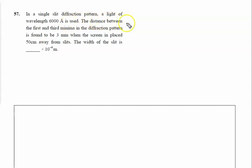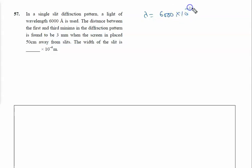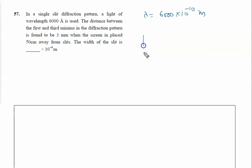In a single slit diffraction pattern, light of wavelength 6000 angstrom is used — lambda is given as 6000 angstrom, so 6000 × 10⁻¹⁰ meter. The distance between the first and third minima in the diffraction pattern is found to be 3 mm.